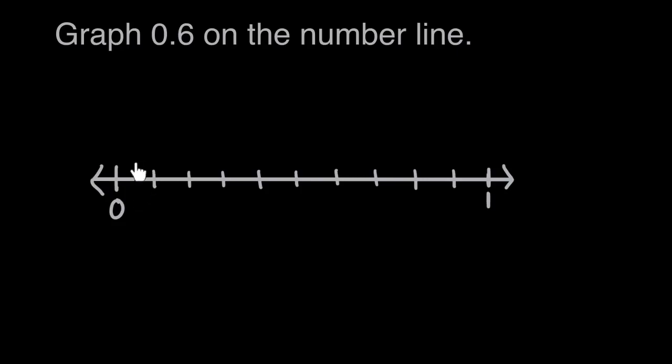So between any two of these spaces, for example, between these first two tick marks, could be represented by one-tenth. It's one of the 10 equal spaces. It's one-tenth of the distance.